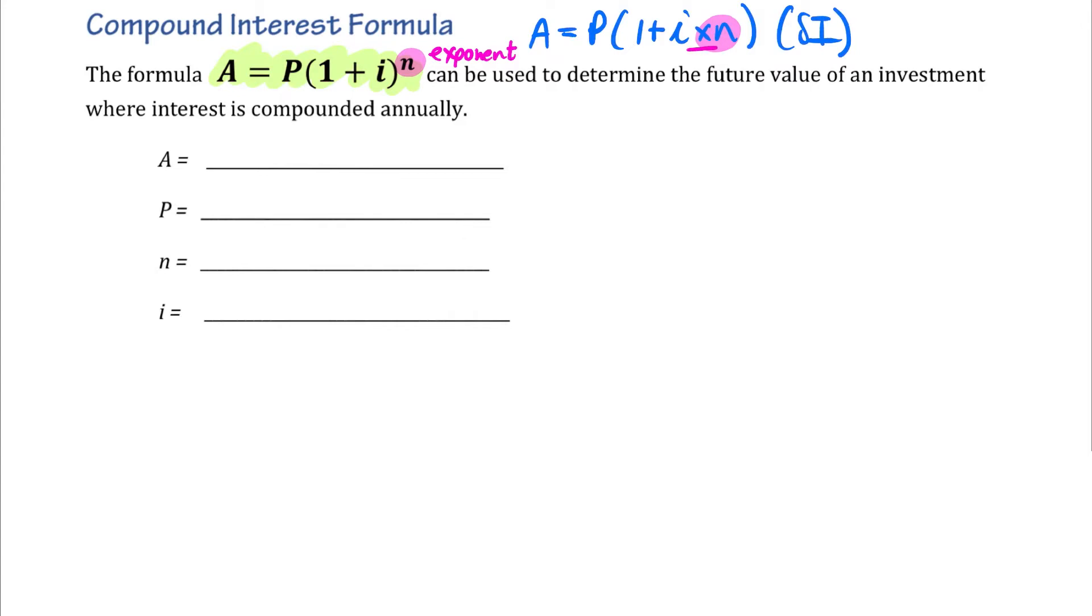Whereas in our simple interest, we are multiplying. So the formulas are very, very similar. That should help you to learn them. They both have 1 plus I. But with compound interest, N is outside the bracket as an exponent. With simple interest, N is inside the bracket, and we're multiplying by N.